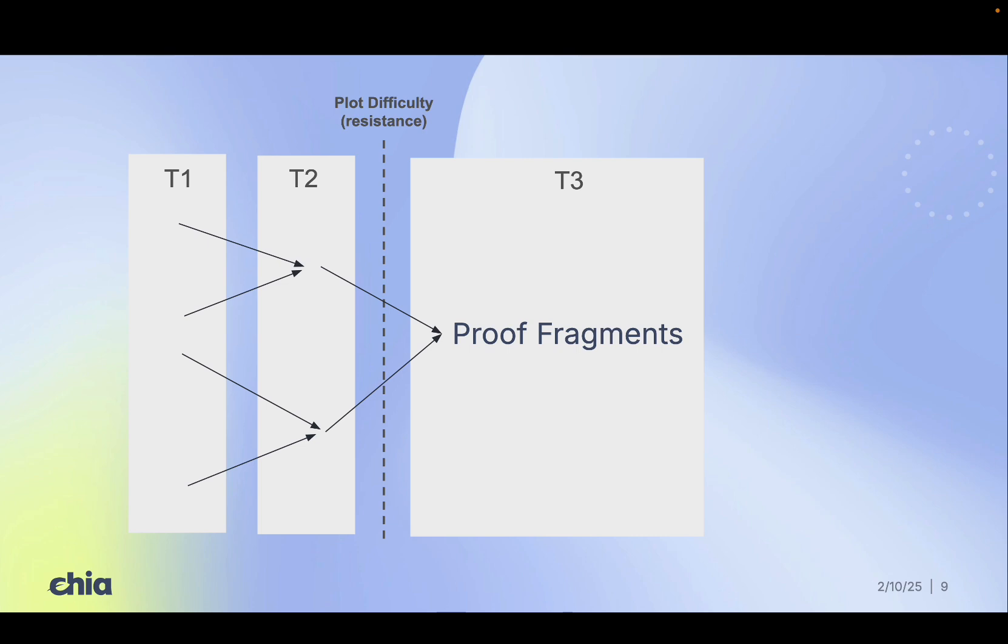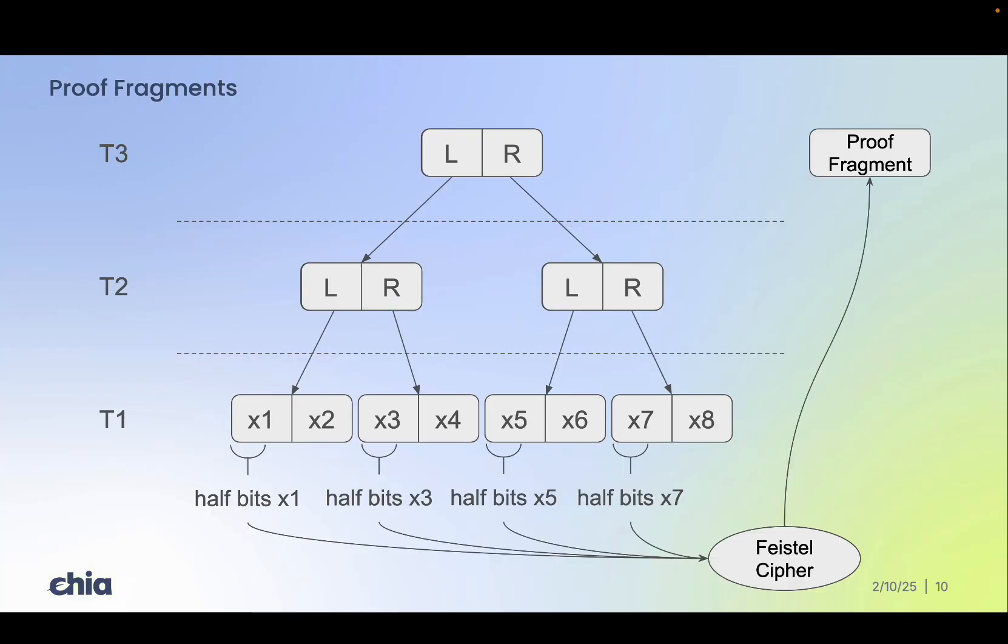Once we reach T3, we transform paired x values into proof fragments. Proof fragments are bit dropped and encrypted partial proofs.